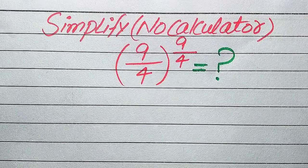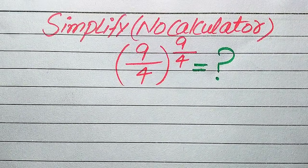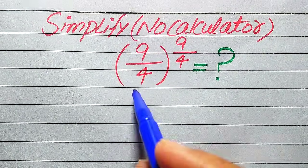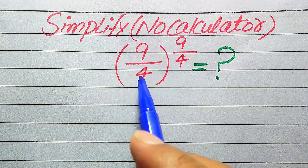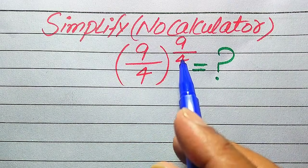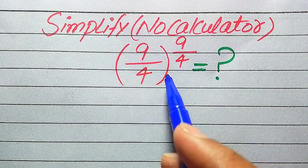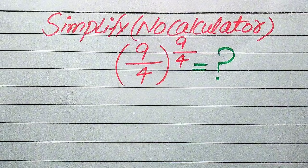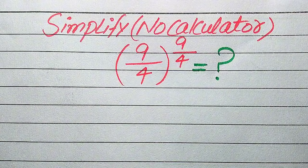Hello everyone. How to simplify this nice algebraic expression: 9 divided by 4, to the power of 9 divided by 4? We will write this algebraic expression into simplified form.